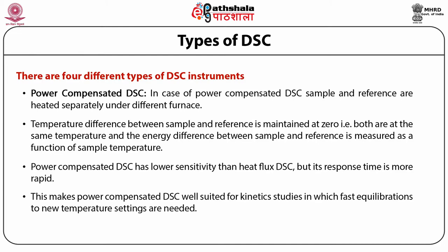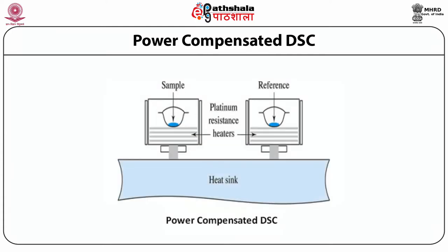Power compensated DSC instruments also have higher resolution than heat flux DSC. The calibration constant in power compensated DSC, which converts peak area into joules, is an electrical conversion factor. In the basic diagram of power compensated DSC, the sample is shown in the left window and the reference in the right window. The horizontal lines under the sample and reference are designated platinum resistance heaters, connected to a heat sink.